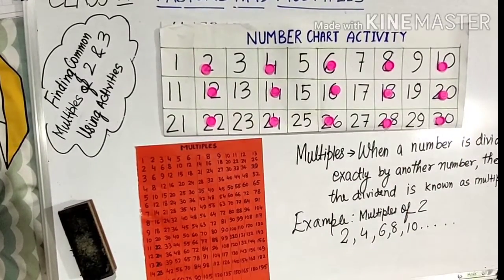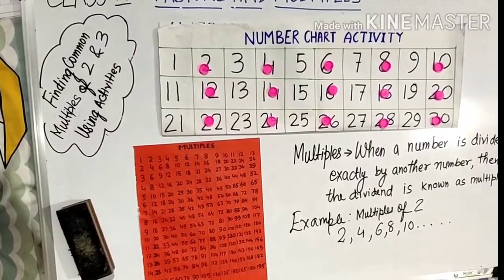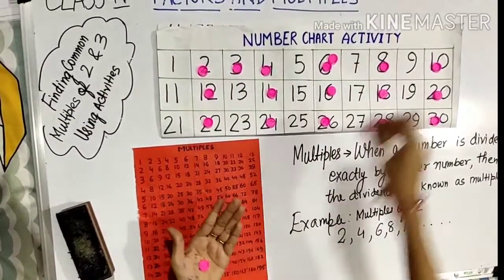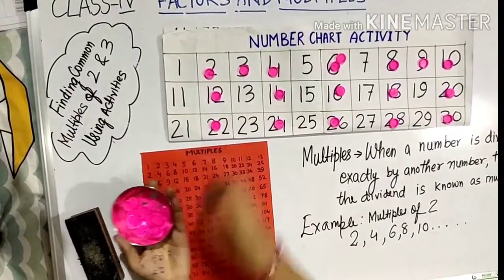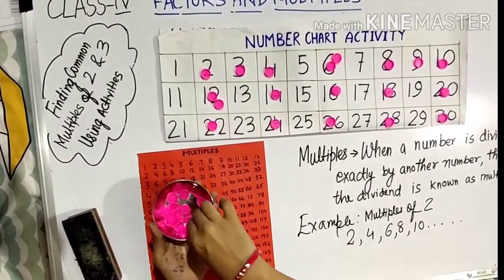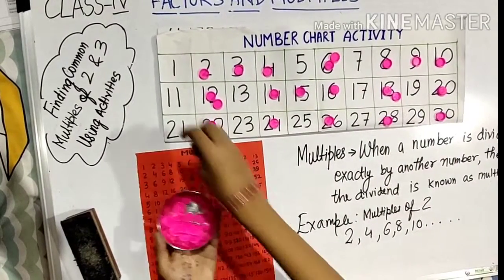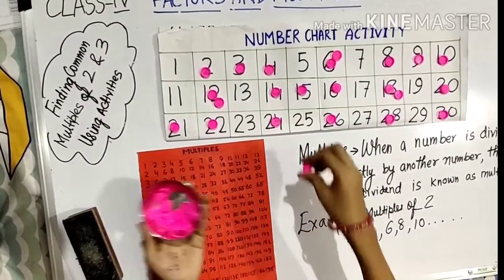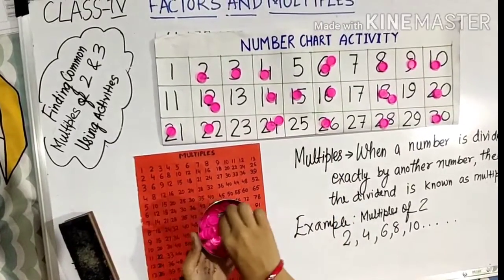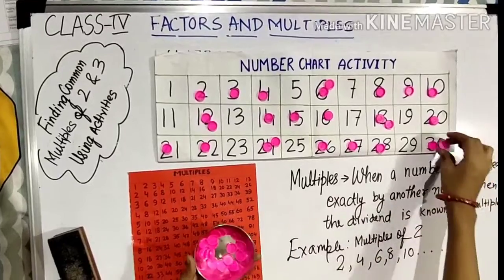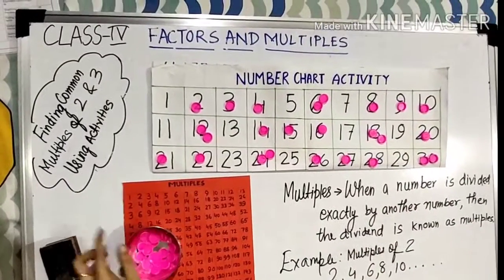Now let us see what are the multiples of 3. 3 ones are 3, 3 twos are 6, 3 threes are 9, 3 fours are 12, 3 fives are 15, 3 sixes are 18, 3 sevens are 21, 3 eights are 24, 3 nines are 27, 3 tens are 30.